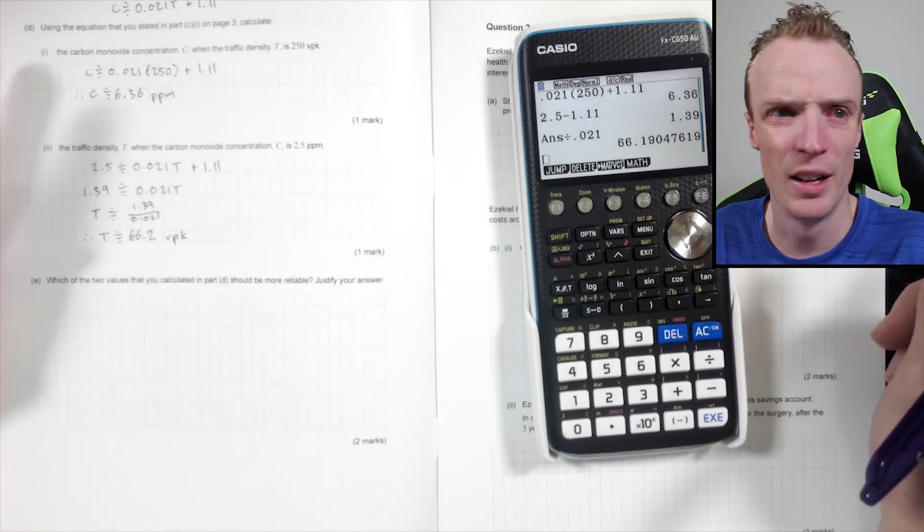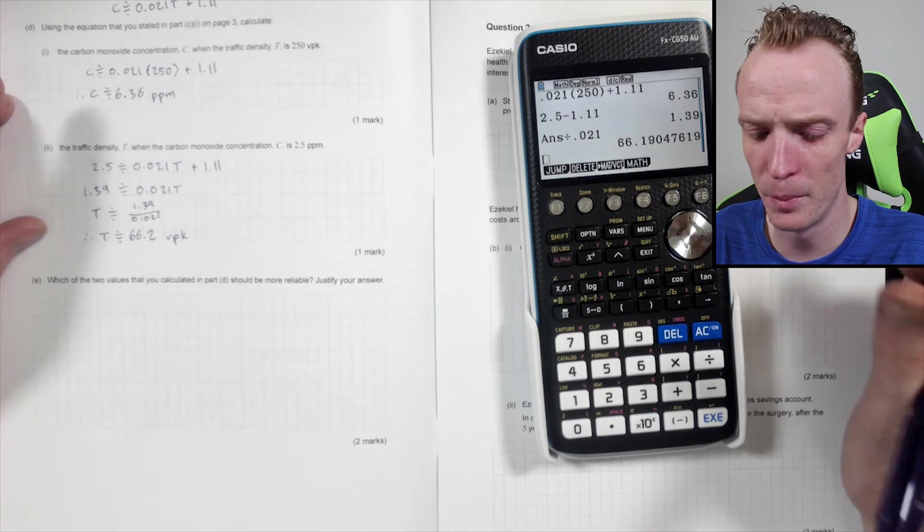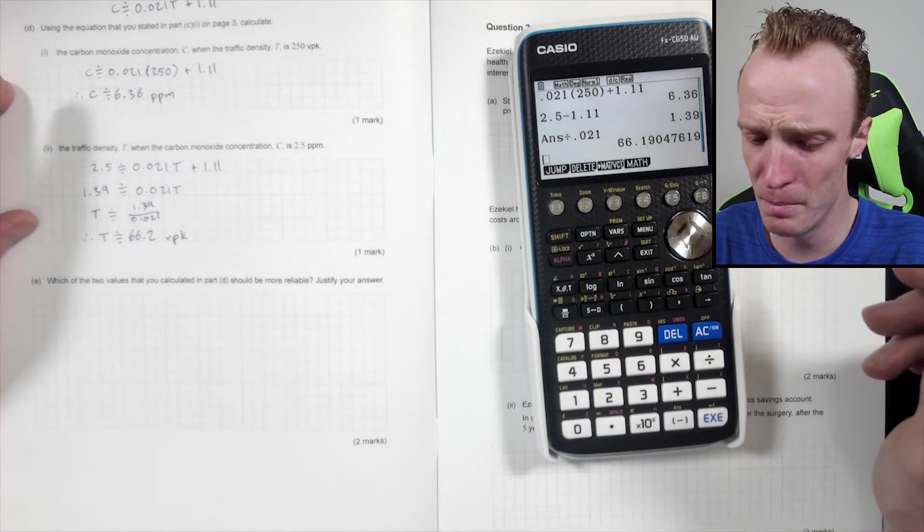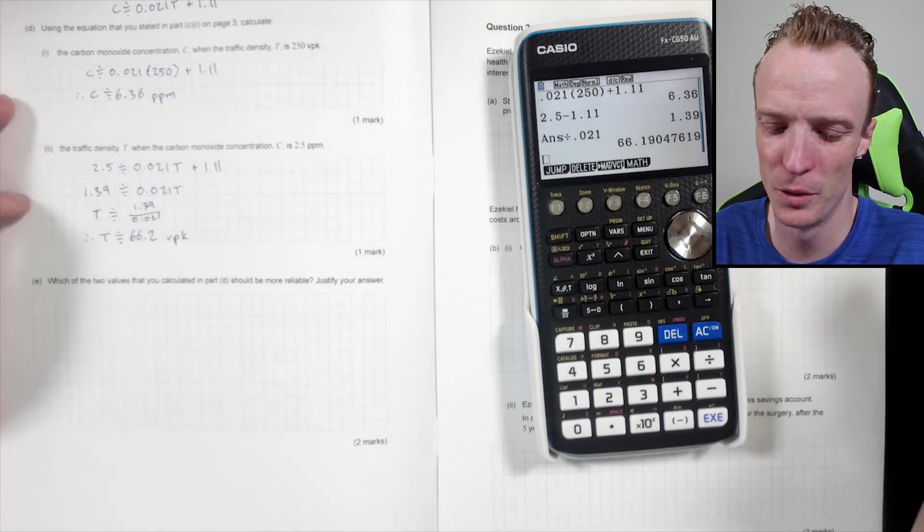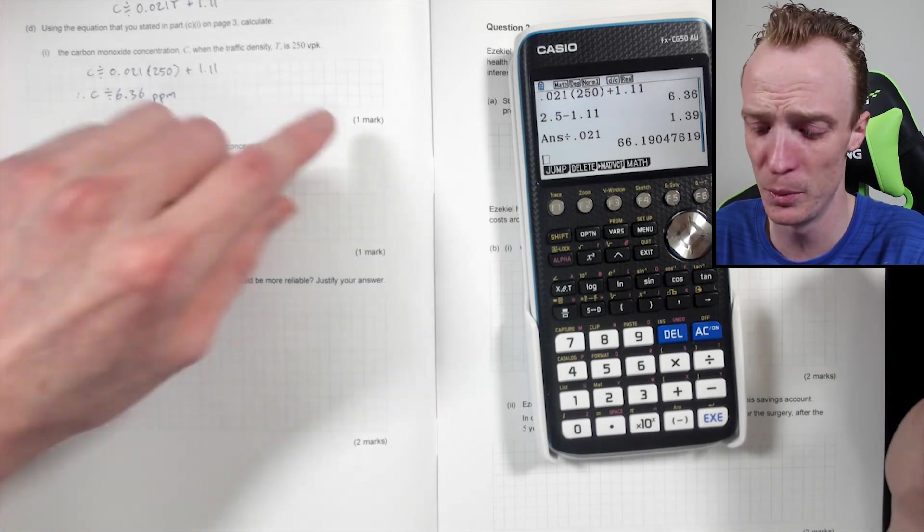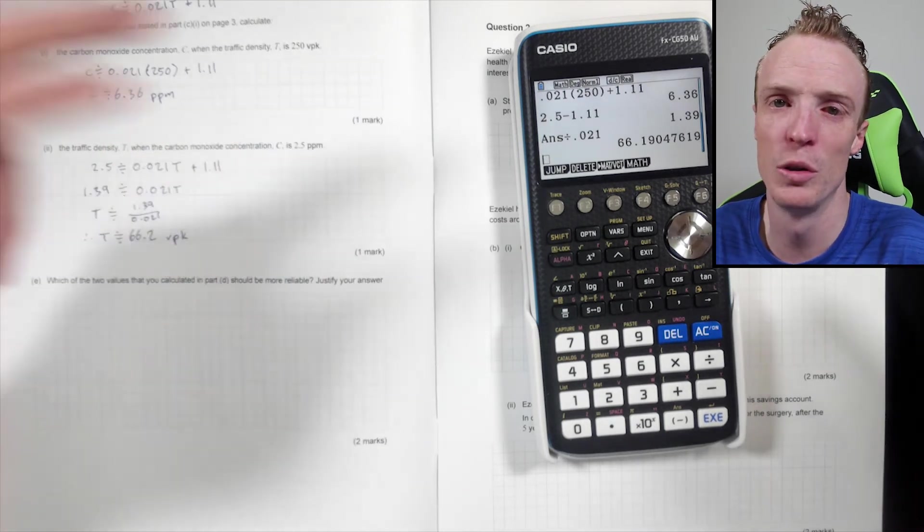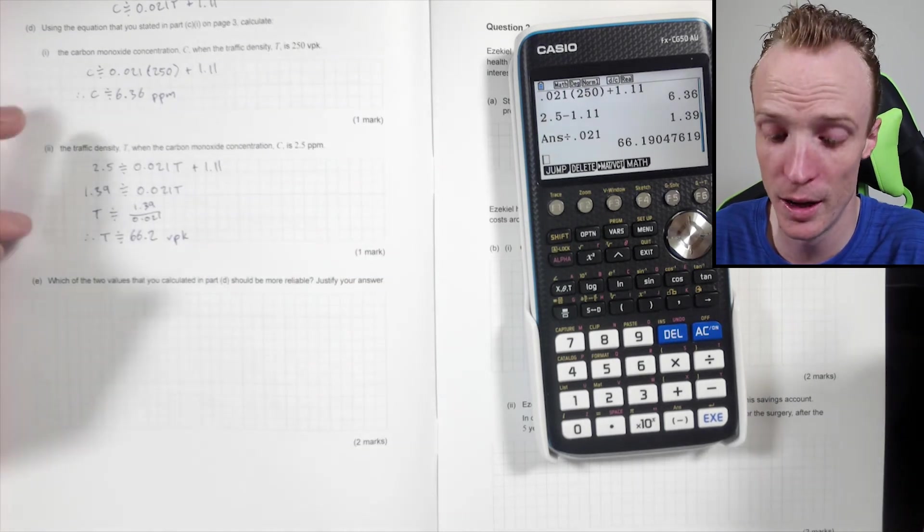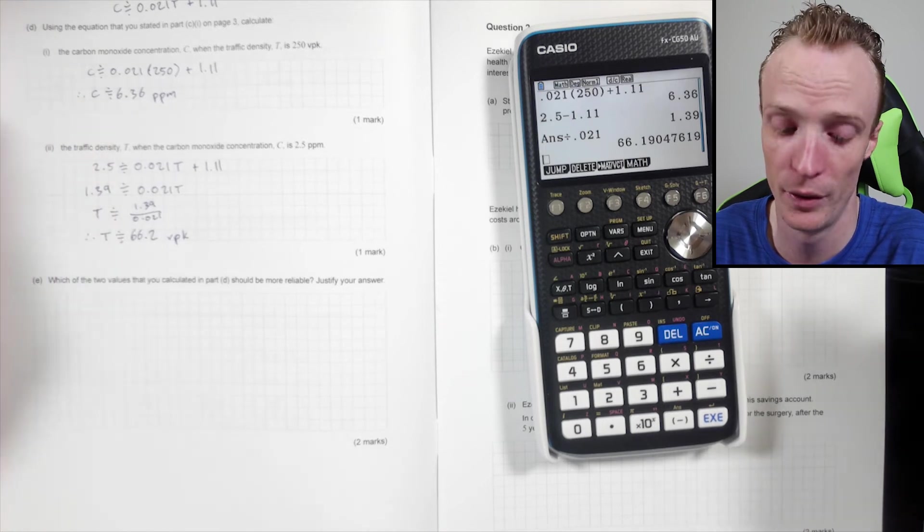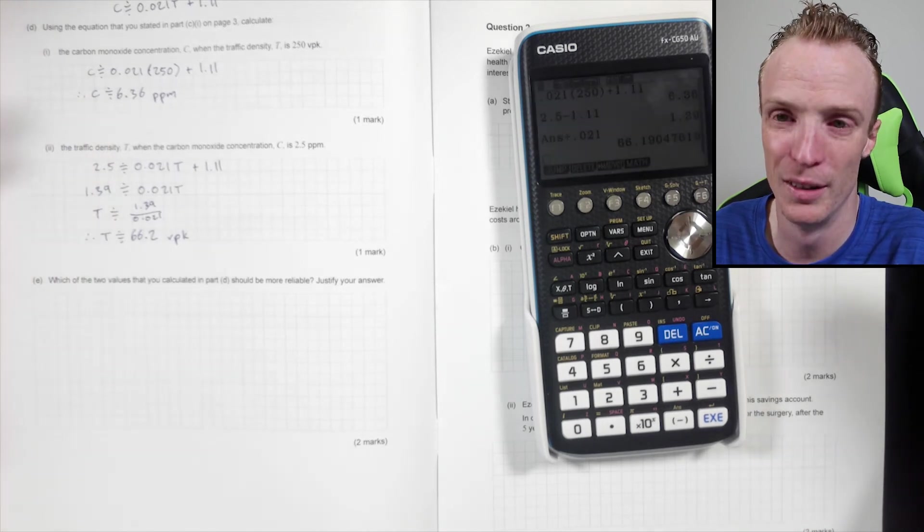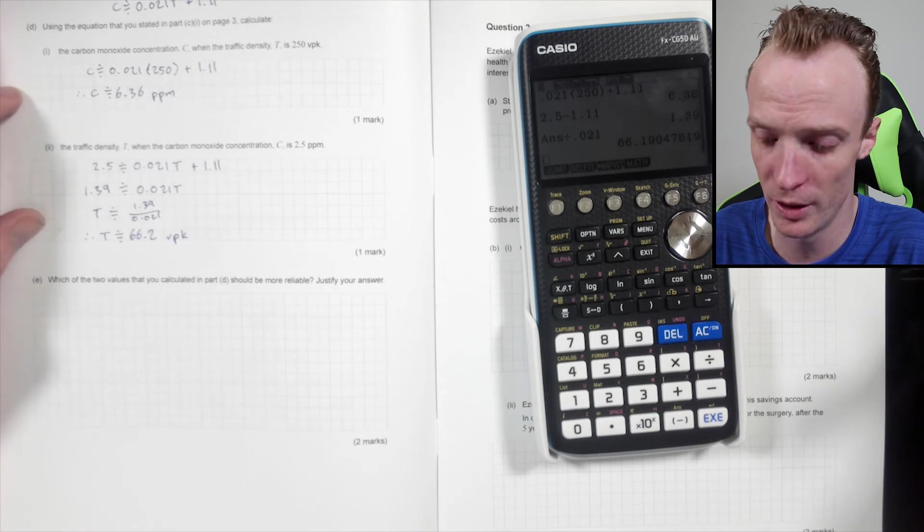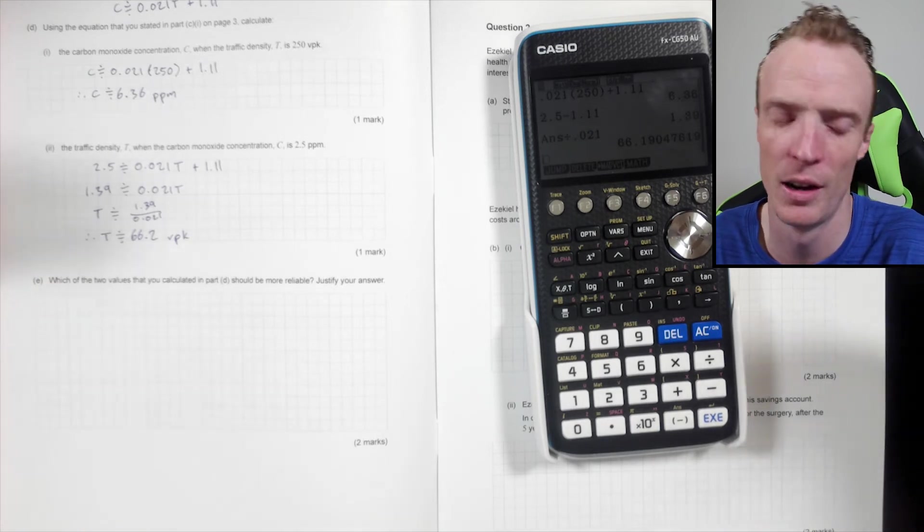Now you can actually answer these as well using your calculator by graphing it, but the algebra way is fairly quick and simple. Because these were only worth one mark, you could do it in your calculator and get that mark easily enough because they're just seeing whether you can get the right answer. Personally I'll find algebra a little bit quicker and more efficient to do it than having to graph it and get the window right and things like that.